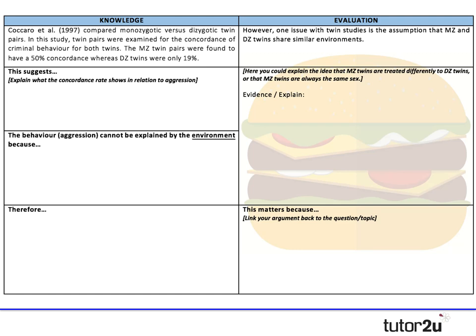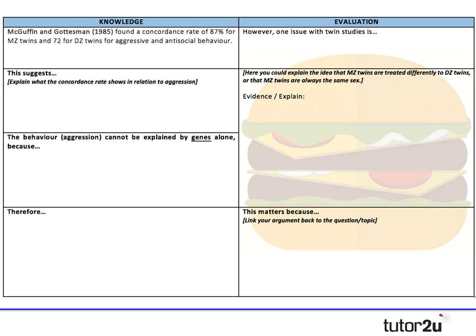For evaluation, students can note a problem with twin studies is the assumption that MZ and DZ twins share similar environments — evidence suggests MZ twins are treated more similarly than DZ twins, which could account for the similarity. Students then need to link this back to the question: it may not be genes causing criminal behaviour, but shared environment. A second study is provided where MZ and DZ rates are very similar, so students can practice concluding that behaviour is more likely the result of nurture — reinforcing their understanding of how to interpret concordance rates.